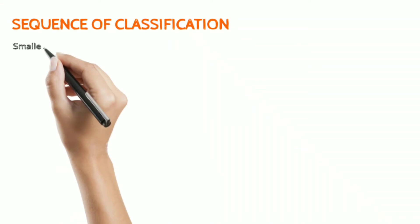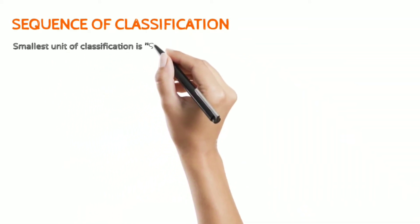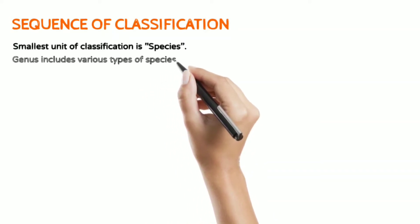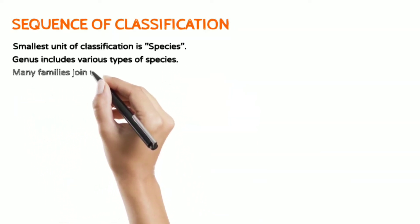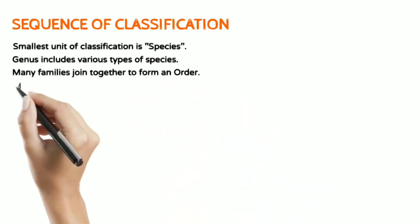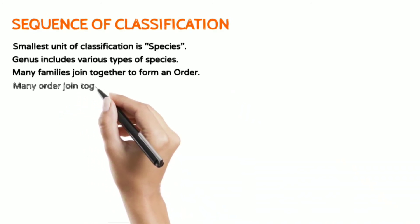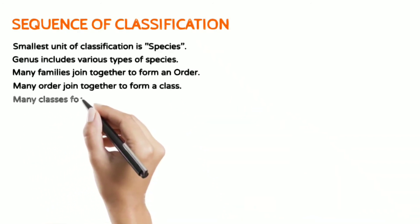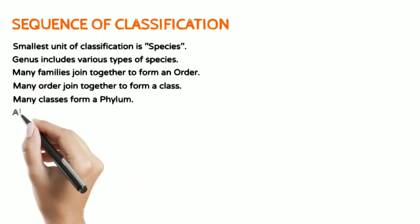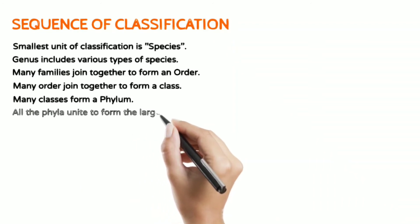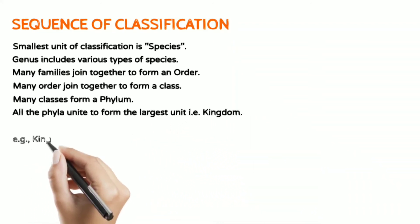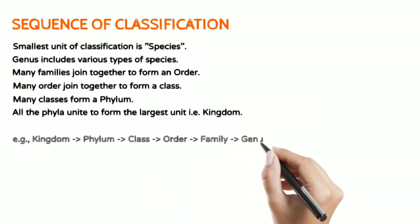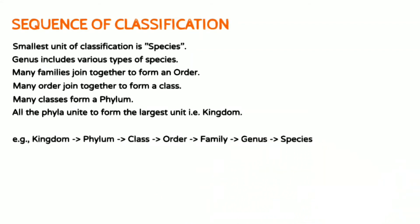There is a certain sequence of classification. The smallest unit of classification is species. Many species come together to form a genus. Many genera come together to give rise to a family. Many families join together to make an order. When many related orders come together, they form a class — Mammalia, which we belong to, is a class. When many classes come together, they constitute a phylum, and the largest unit is the kingdom. So the sequence is: kingdom, phylum, class, order, family, genus, and species — species being the lowest unit.